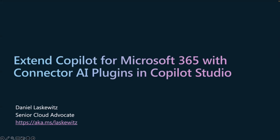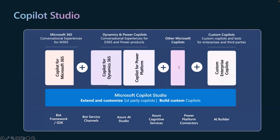For a quick recap of Copilot Studio: Copilot Studio is the tool to extend and customize first-party copilots, but also to build your own custom copilot. As you can see in this picture, at the top you can see a whole bunch of copilots within Microsoft, and you can also build your own custom copilots. At the bottom of the image, you can see that you can use other services outside of Copilot Studio to connect with your copilot or even with one of the first-party copilots. You can use Bot Framework skills, Azure AI Studio, and tons of other options.